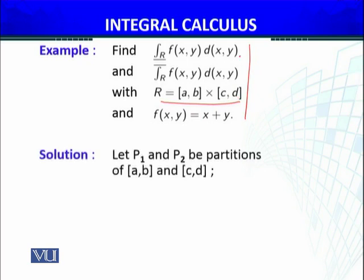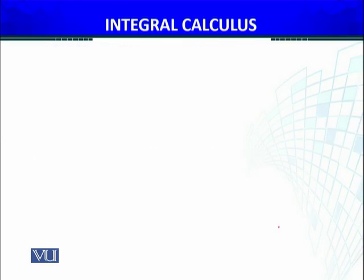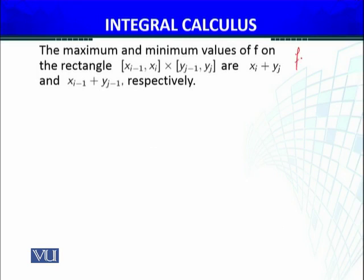To calculate the upper and lower integral, we start with partitions P₁ and P₂, where P₁ is the partitioning of [a,b] and P₂ is the partitioning of [c,d]. The function f(x,y) = x + y is defined over each subrectangle.